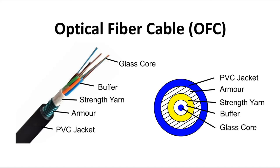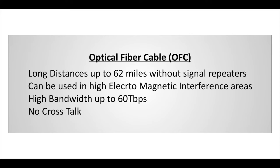Cat6 cables can be replaced with optical fiber cables if the distance exceeds 100 meters or if bandwidth requirements are higher. Optical fiber supports distances up to 60 miles with high bandwidth, experiences effectively no crosstalk, and can be laid in high electromagnetic interference areas without any problem.